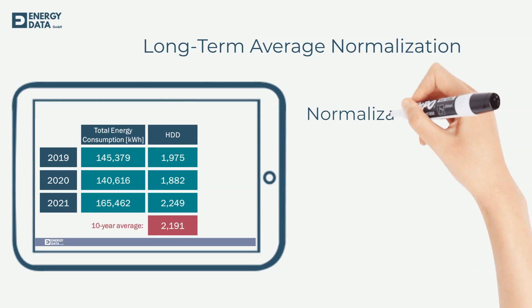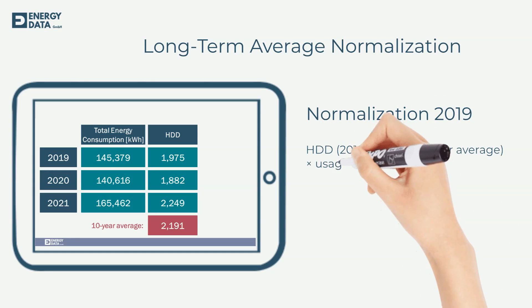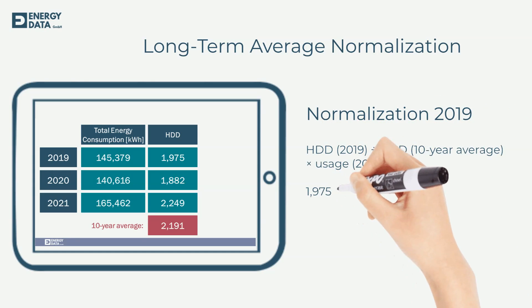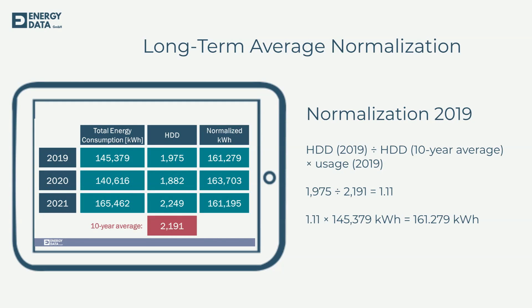To normalize the energy consumption, you check how many degree days in your period there have been compared to the long-term average. This factor will be multiplied by the actual usage, and the result is normalized usage in kilowatt hours. As we already noticed, 2020 had weather-corrected the worst energy performance.